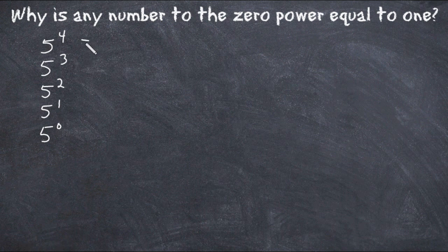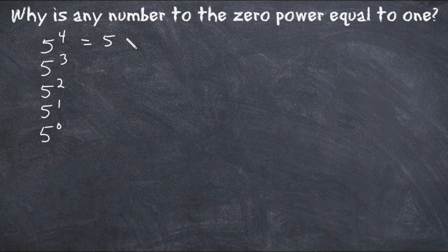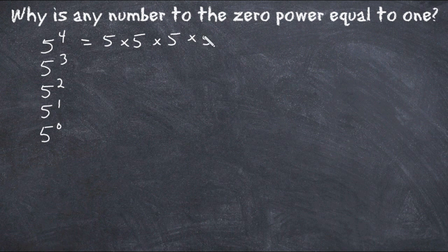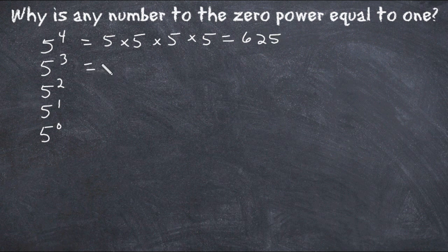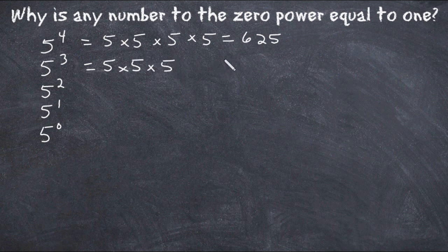Now if we write five to the fourth power in expanded form and solve, that gives us a value of 625. And if we take five to the third power and multiply those fives together, that gives us 125.